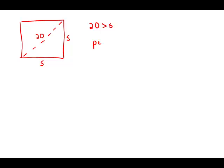We know that the perimeter is going to be 4 times s, but that's going to have to be less than 4 times 20, which is 80, because the side has to be less than 20.